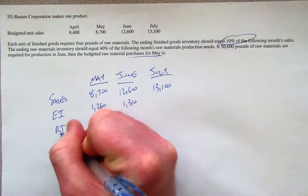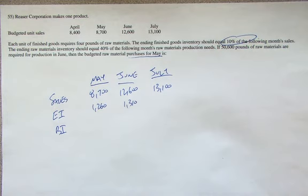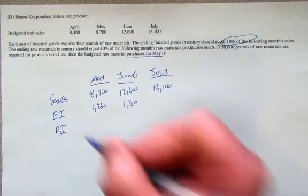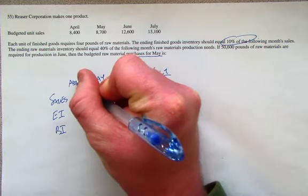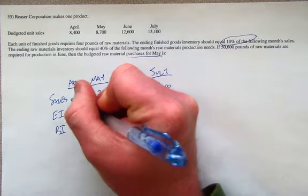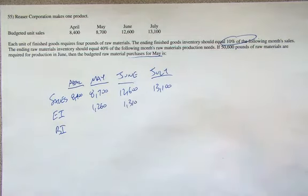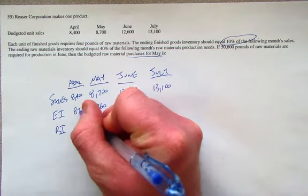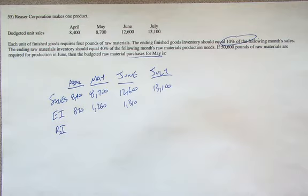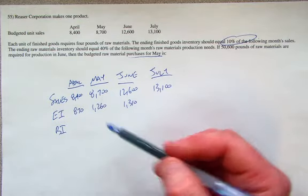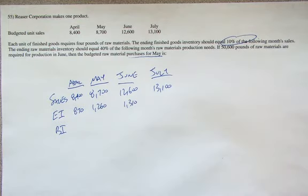But if we start the month with some beginning inventory, we don't need to purchase or produce that inventory because we already have it on hand. So let's throw April into the mix. And we know that the ending inventory of April would be 870 units. That's just 10% of May's production forecast or sales forecast.